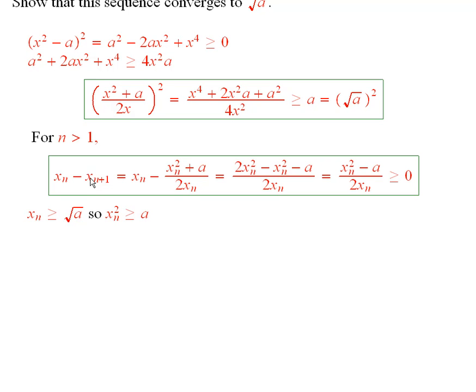Now x sub n plus 1 is given by a formula, namely this, and so now when I add these two expressions, I get this, and you observe that 2x sub n squared minus x sub n squared is just x sub n squared minus a over 2x sub n.